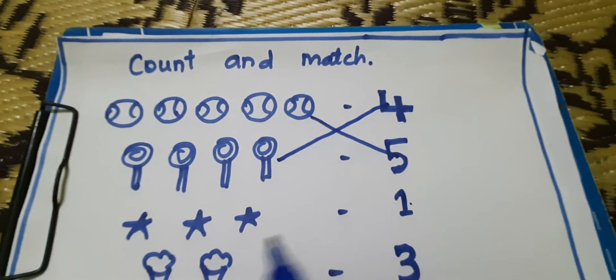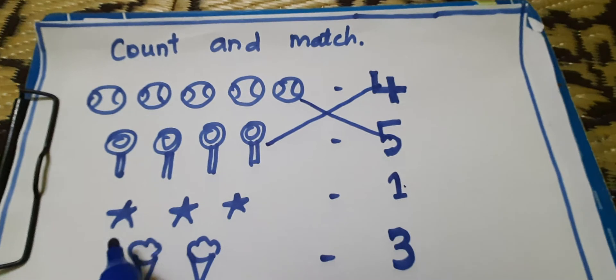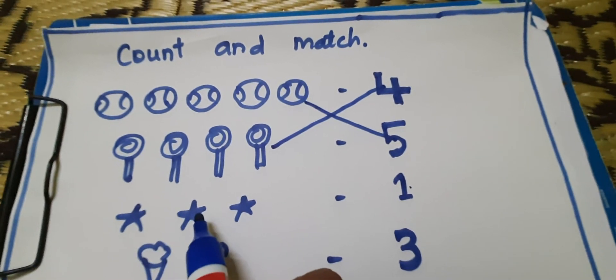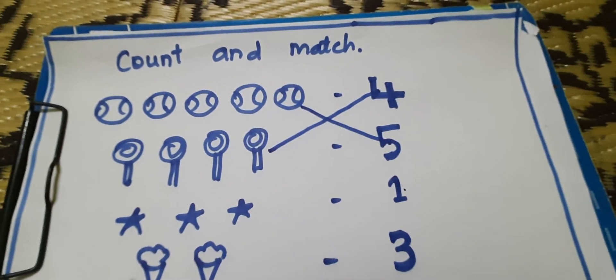Then, wow. Star. How many stars are there? Count it. 1, 2, 3. 3 stars.